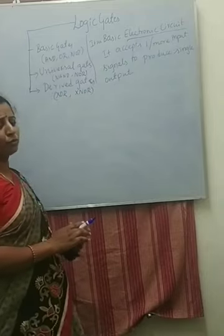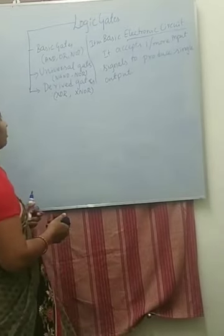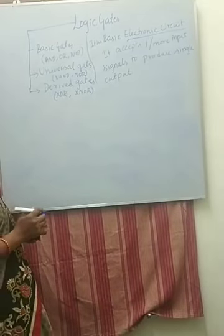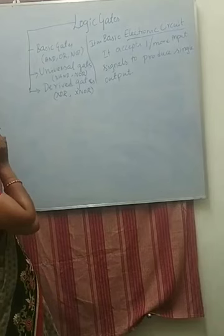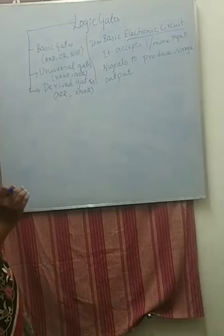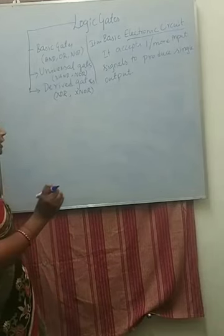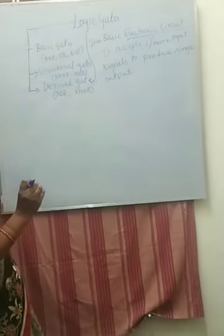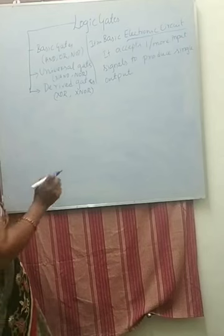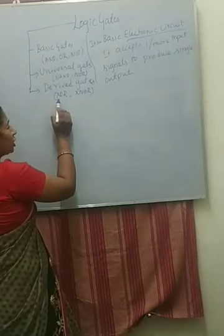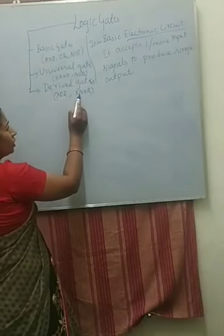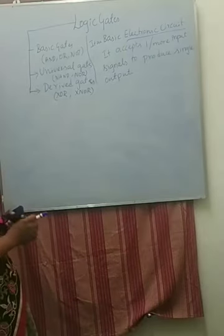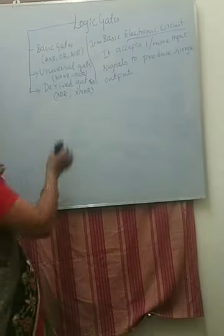So to summarize: there are three types of gates — basic gates, universal gates, and derived gates. Basic gates are AND, OR, and NOT. Universal gates are NAND and NOR. Derived gates are XOR (exclusive OR) gate and XNOR (exclusive NOR) gate. We will discuss these gates individually one by one.